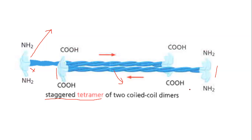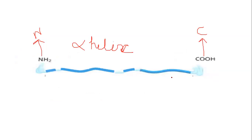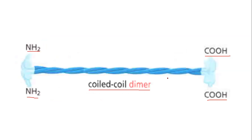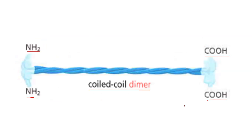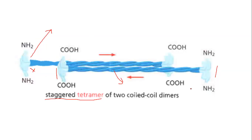So this is the first stage, where two subunits bind by coiling around each other — you call it a coil-coil dimer. Then two coil-coil dimers bind together, but in a staggered and anti-parallel manner. So there are two things: staggered manner and anti-parallel manner.